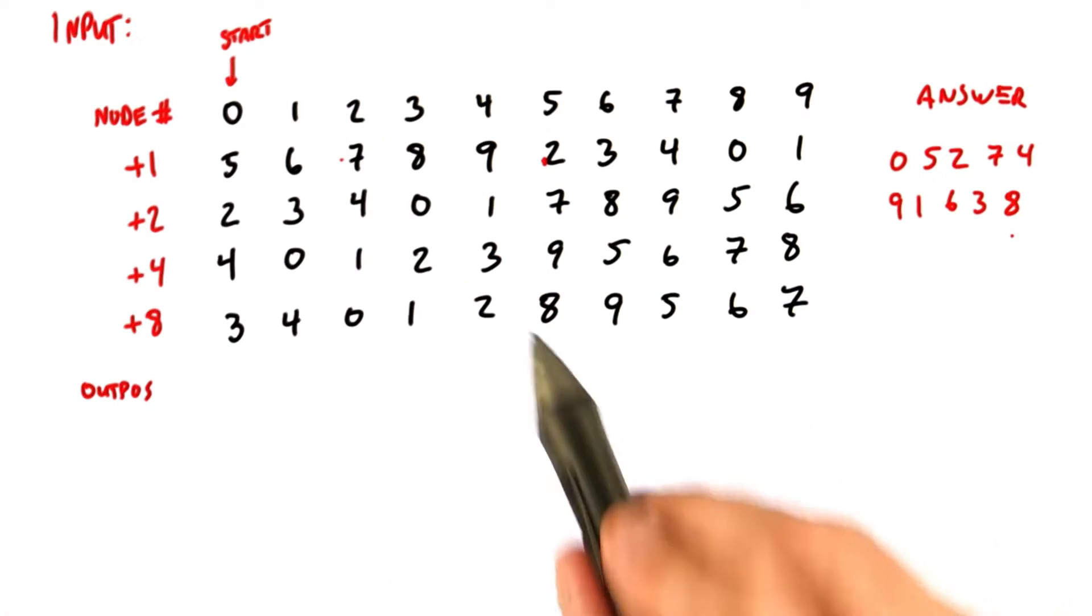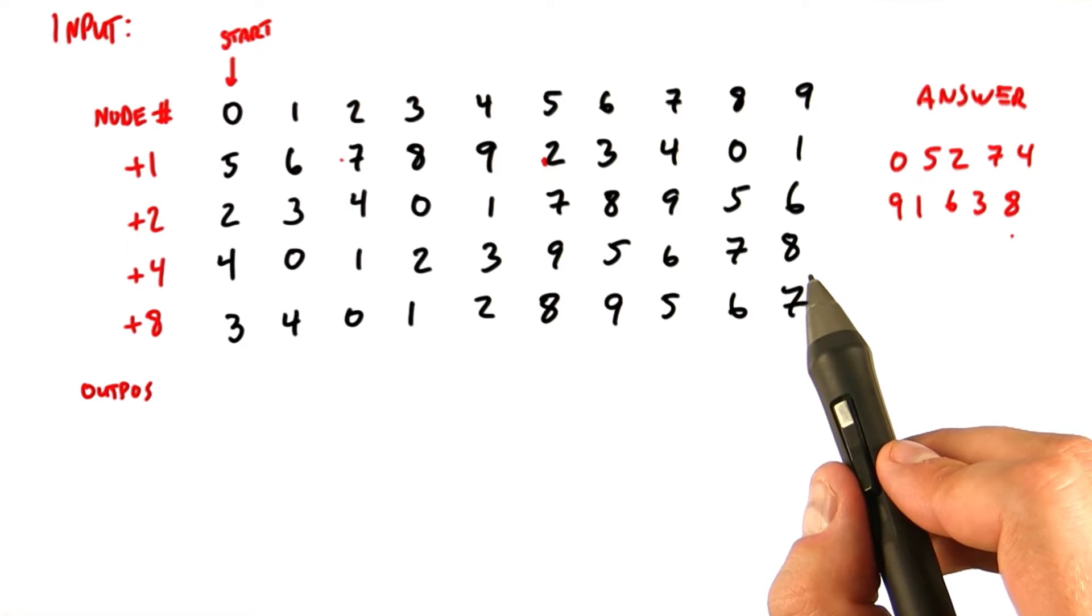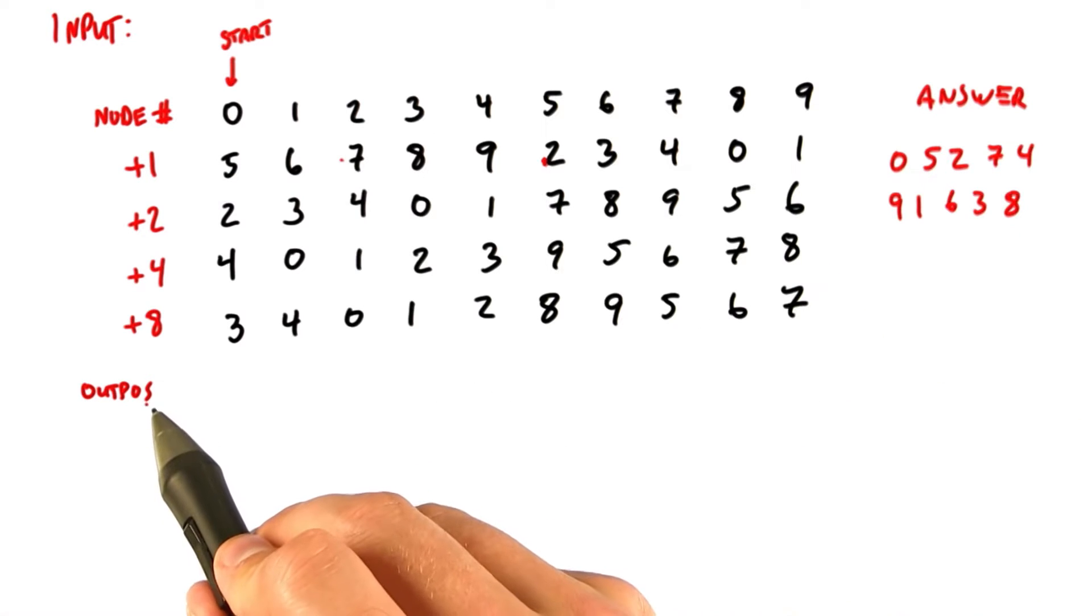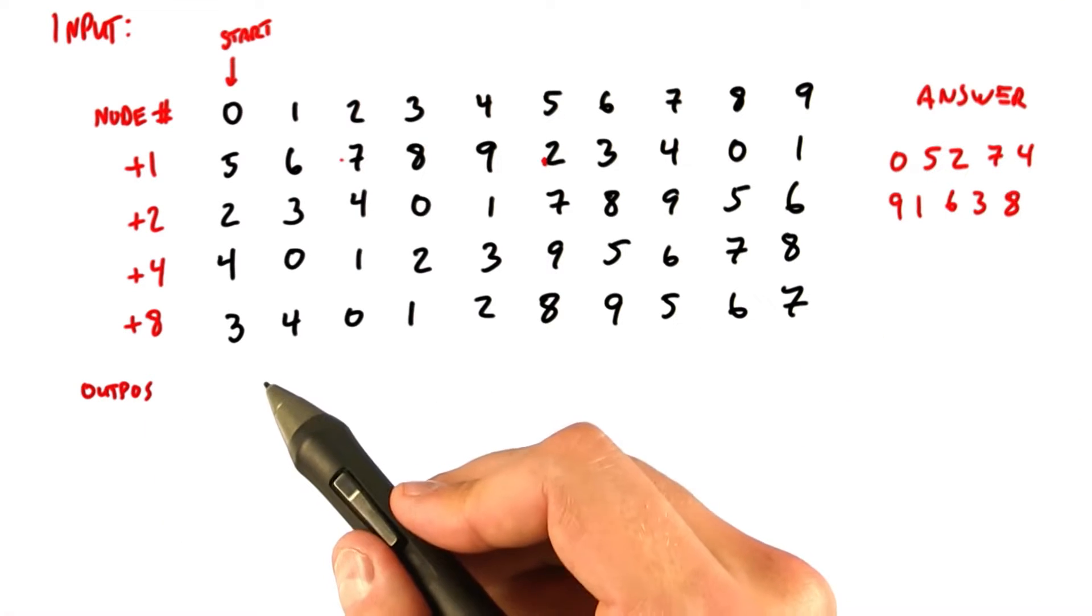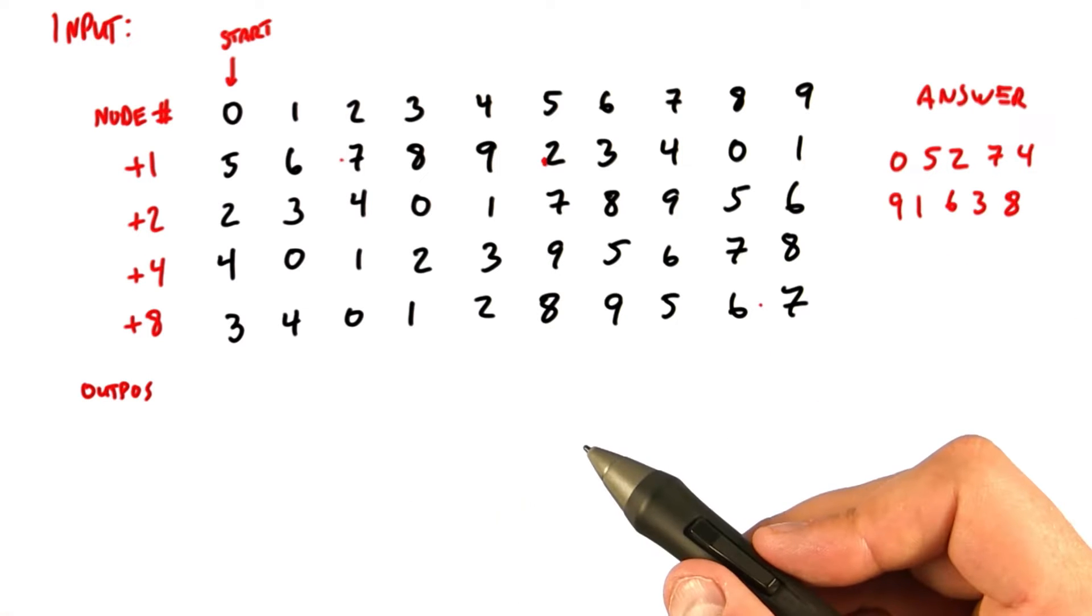To generate this answer, each node is going to compute its position in the output list, and we're going to call that position outpause. And then when we're done, we can use that position to scatter the node into its proper location in that output list.